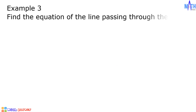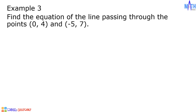Last example: let us find the equation of the line passing through the points 0, 4 and negative 5, 7. Let us consider 0, 4 as x sub 1, y sub 1 and negative 5, 7 as x sub 2, y sub 2.